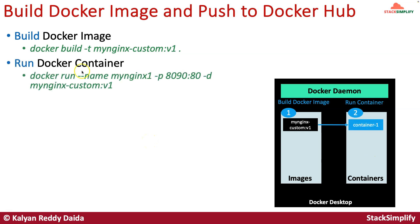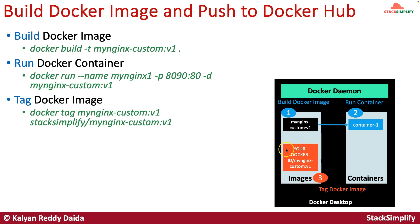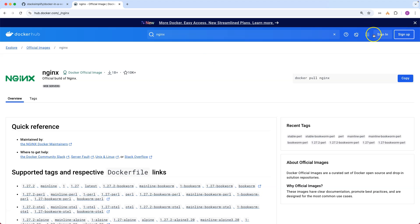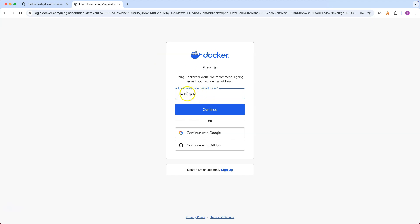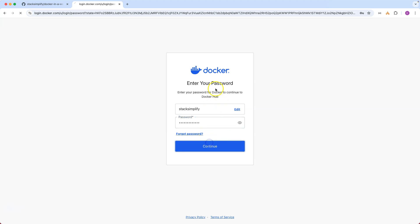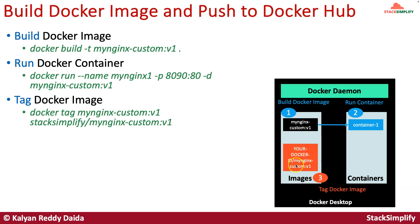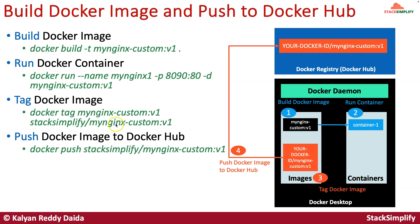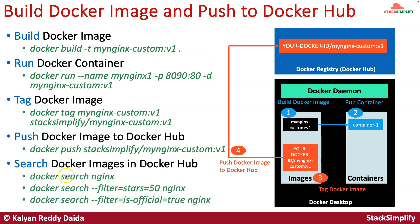Once the docker image is built, we will run it by creating a container and test whether our sample index.html is accessible. Once that is done, we will tag the docker image with our docker hub ID — my docker hub ID is stacksimplify, yours may be different. We will log in with our docker ID, tag the image, then use docker push to push the image to docker hub and verify it was successfully pushed. We will also learn about the docker search command.